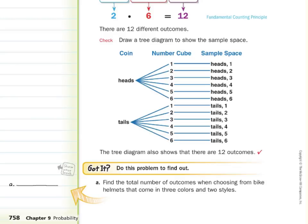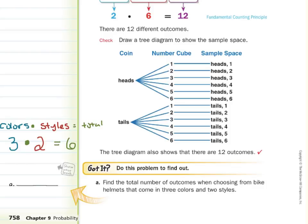Now we can work on our 'got it.' Find the total number of outcomes when choosing from bike helmets that come in three colors and two styles. We multiply the number of colors by the number of styles to get our total. Our number of colors is three, our number of styles is two, and three times two gives us six possible outcomes.